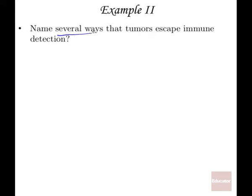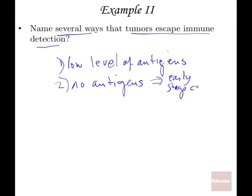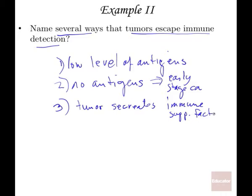Name several ways that tumors escape immune detection. One way is a low level of antigens produced by the tumor. Another way is that there are no antigens at all — this could represent an early-stage cancer. Another main example is that the tumor secretes immune suppression factors. And another, not directly related to the tumor itself, is the condition of generalized immune suppression through drugs or disease.